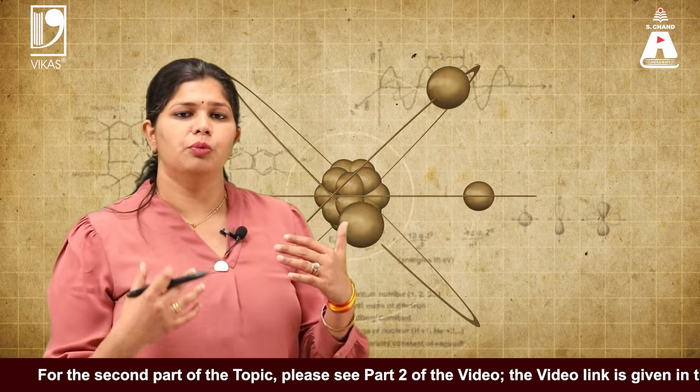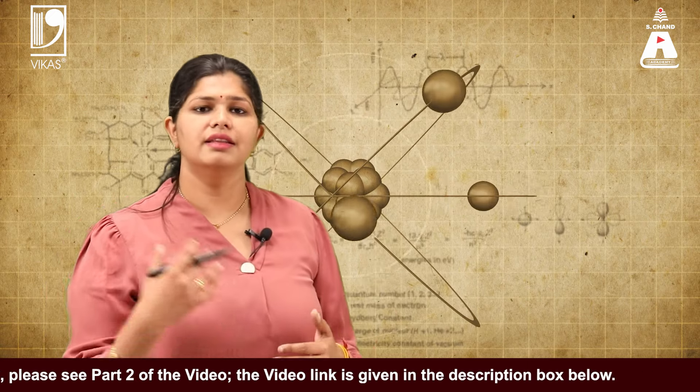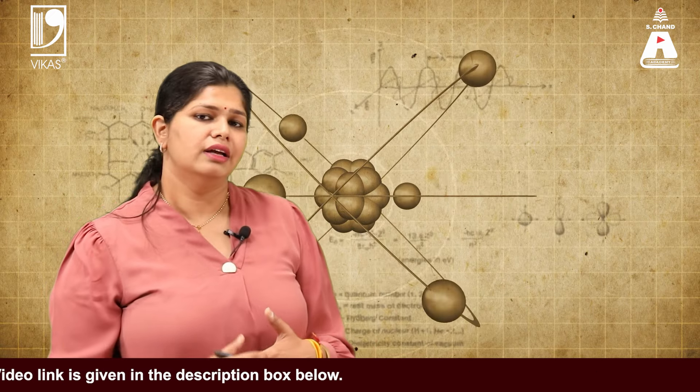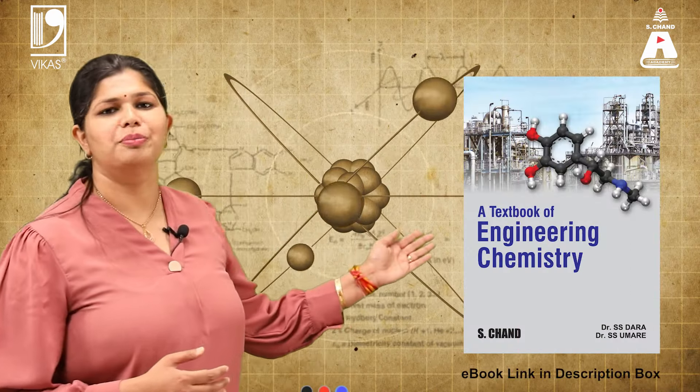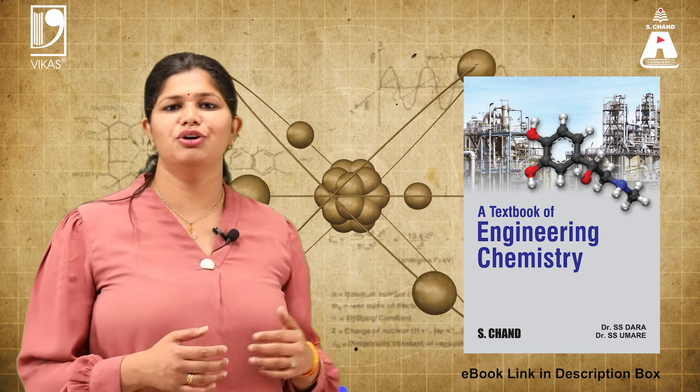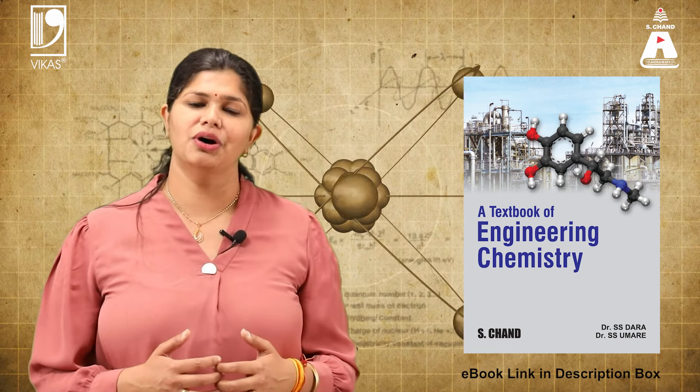In this part we have covered the experimental findings of critical constants and how the Andrews experiment was performed on carbon dioxide and what the results are. In the second part, we will cover the relation between critical constants and Van der Waals constants. To know more about this topic, you can refer to the book by S. Chand Publishing, the link of which is given in the description box.